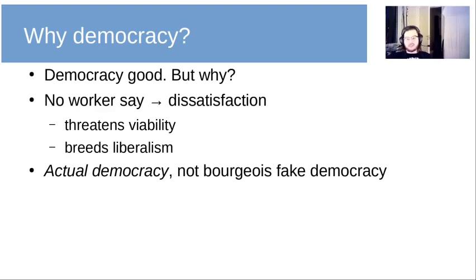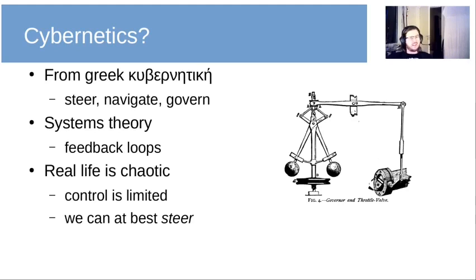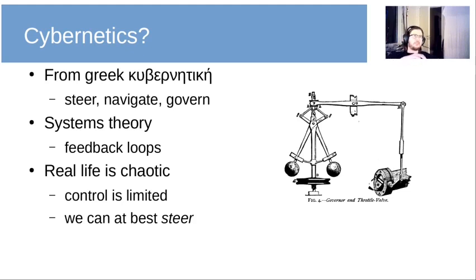I also mentioned cybernetics. Cybernetics comes from the Greek word 'kubernetes', which means to steer, or to navigate, or to govern — especially steering a ship at sea. It's a systems theory that emphasizes feedback loops. On the right here we can see a centrifugal governor controlling a throttle valve in a steam engine; you set the governor so that the system achieves a certain speed. The reason this is relevant is that real life is quite chaotic, and the amount of control you have — the levers you have to push and pull — are actually quite limited.